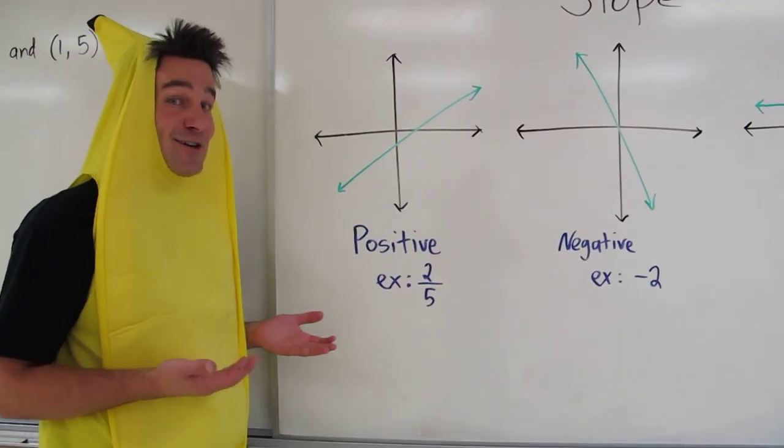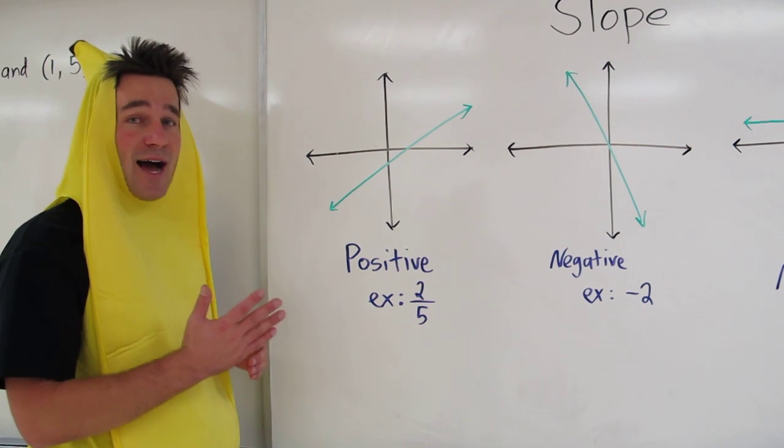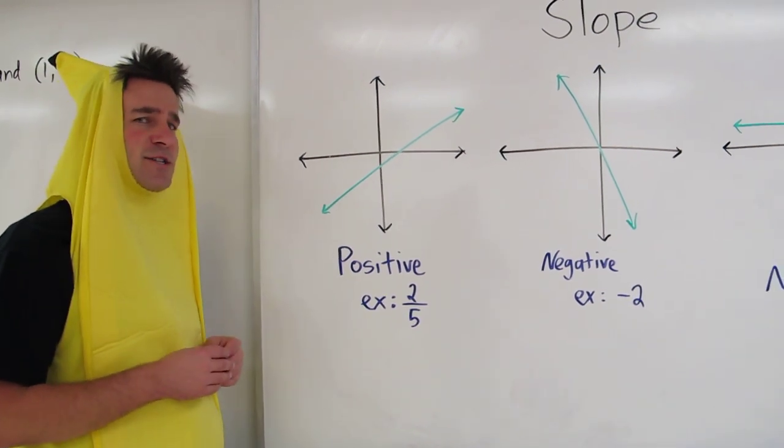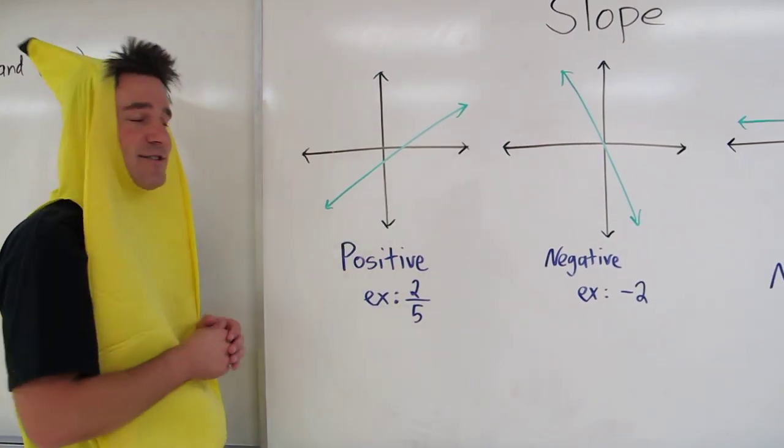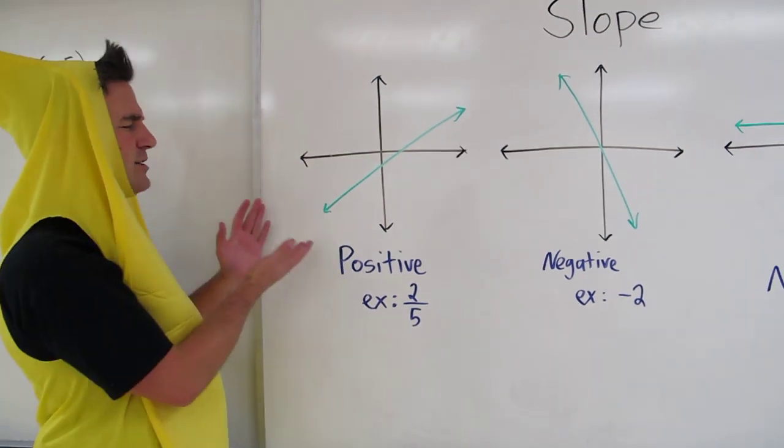Slope is a characteristic of lines that tells us how much a line is going up versus how much it is traveling in a horizontal direction. So here's our first slope.